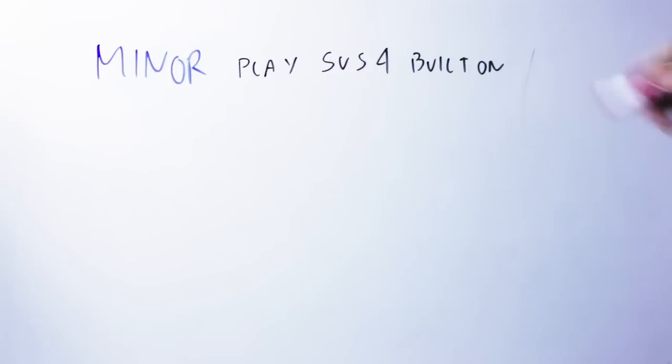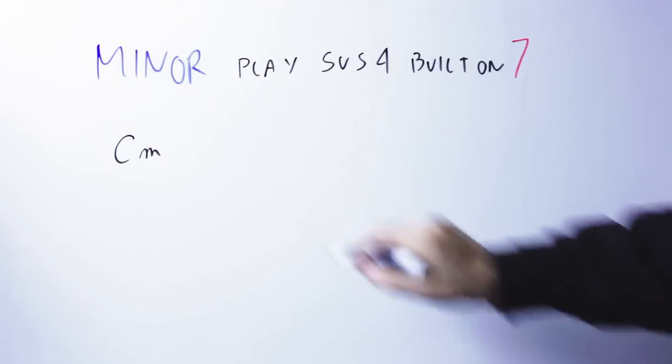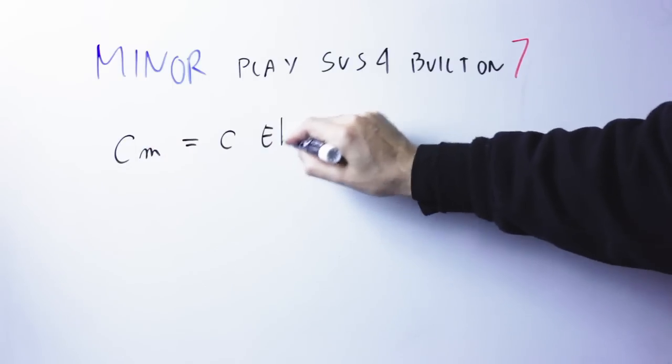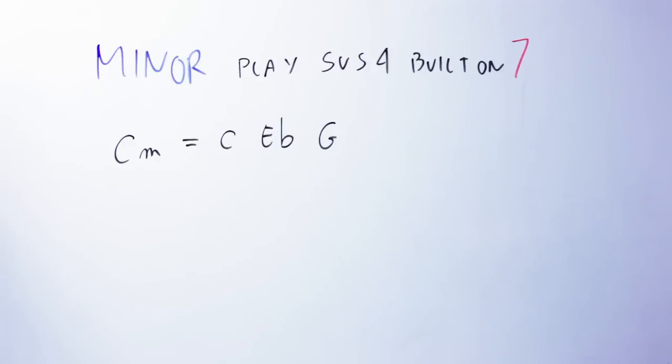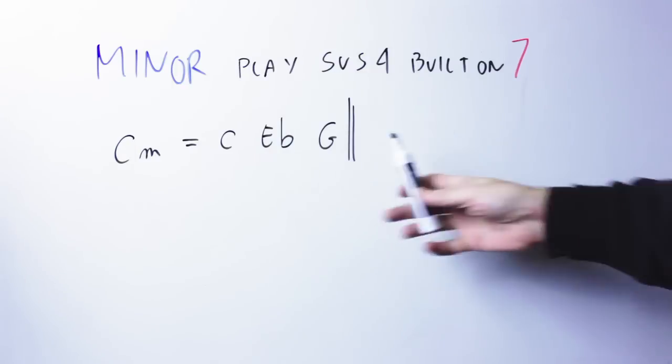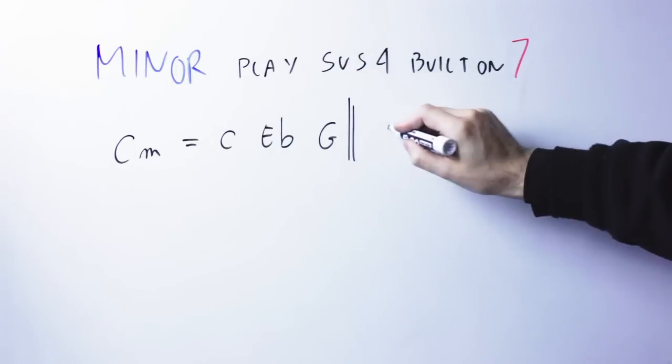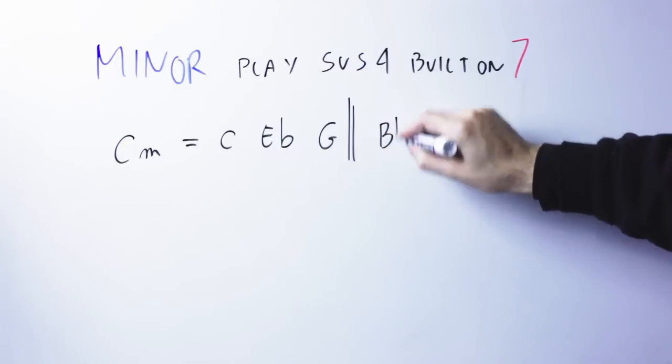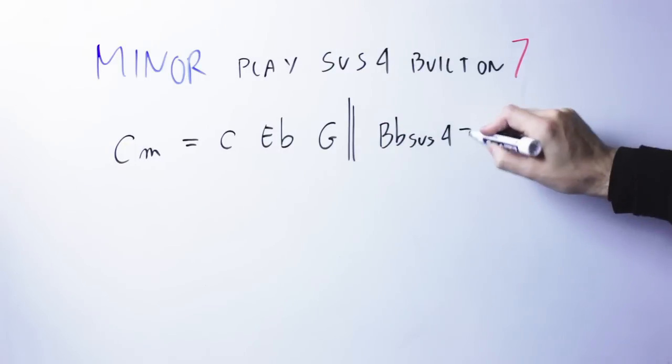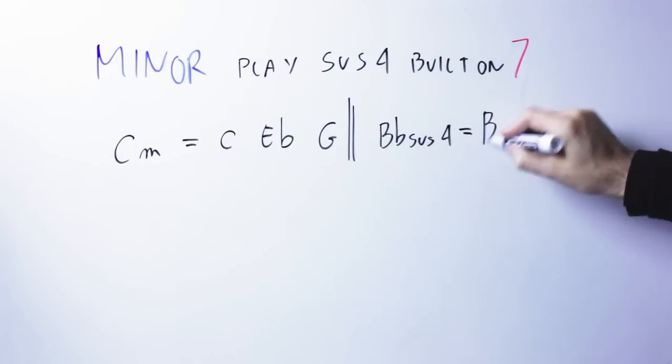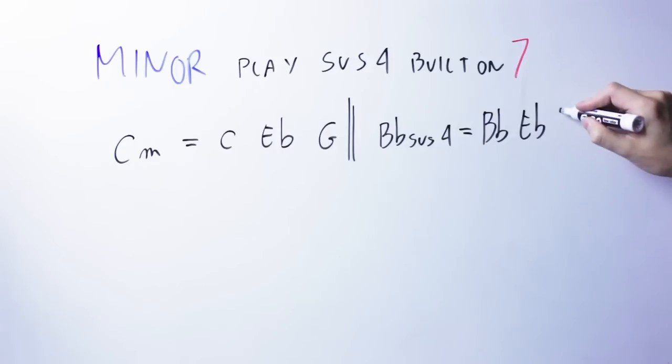The minor seventh is the note that is two frets below the root. So, for instance, if you had a C minor chord, the notes would be C, E flat, G. The minor seventh of C would be the note two frets below the root. C go down two frets when you find a B flat. So, I have to play the C chord and a B flat suspended fourth on top.